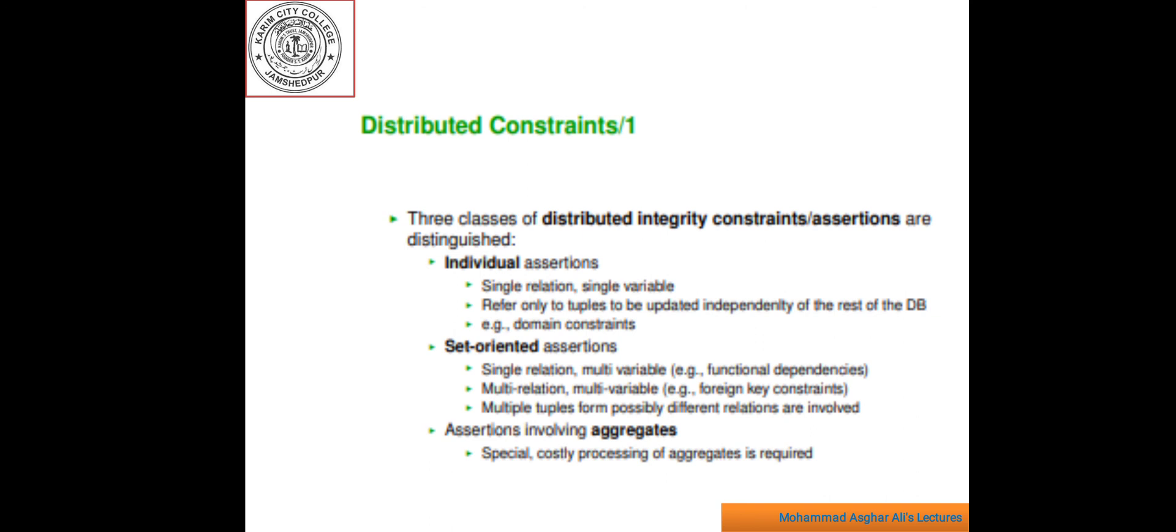Number two, set oriented assertions. It includes single relation multivariable constraints such as functional dependencies and multirelational multivariable constraints such as foreign key constraints. And the third one, assertion involving aggregate requires special processing because of the cost of evaluating the aggregates. Special cost processing or aggregate required.